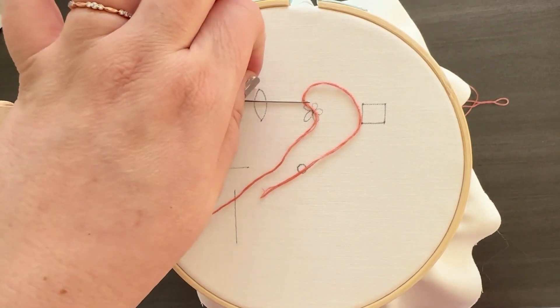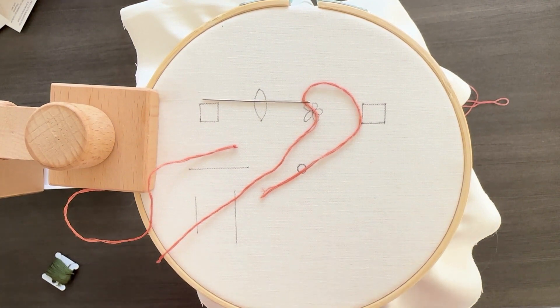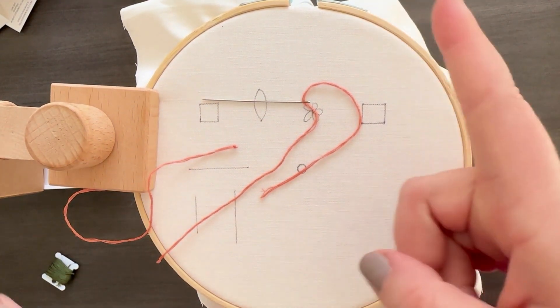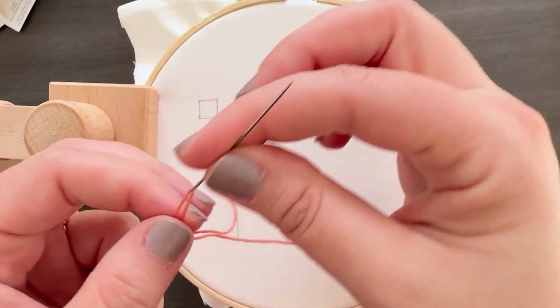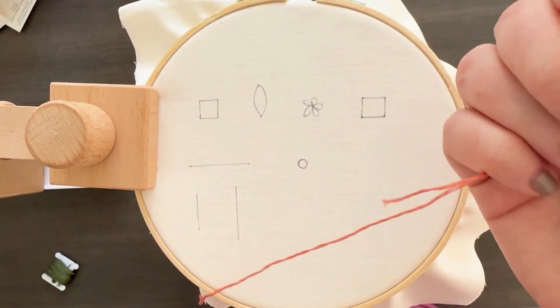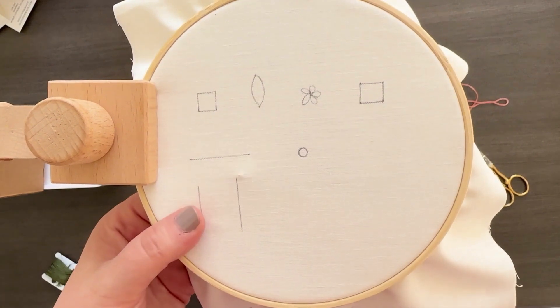I do recommend getting sewing scissors just because I found it's honestly easier to thread the needle because they're so much sharper than your regular scissors. So we're going to do the split backstitch and this is a three. So it's a little bit trickier with a split backstitch, but you'll still get the idea. So I'm going to start on this line that I've drawn right here.